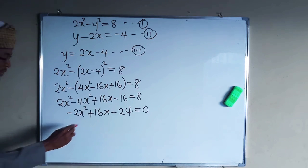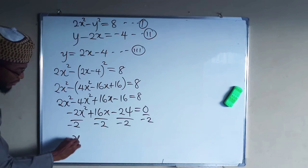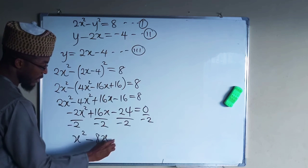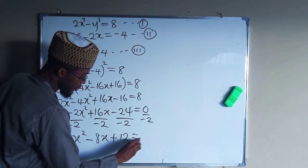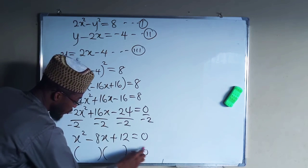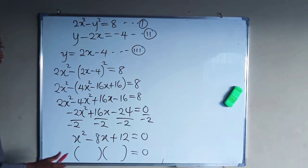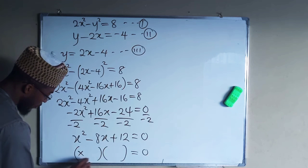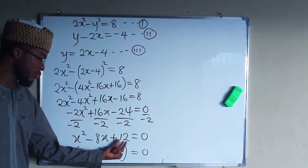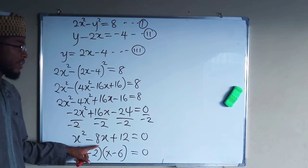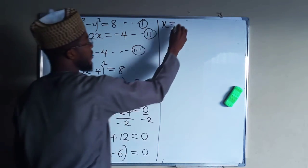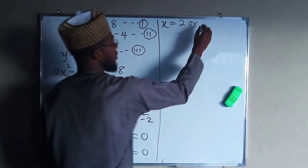Collecting like terms: 2x squared minus 4x squared gives negative 2x squared, plus 16x, minus 16 minus 8 gives negative 24, equals zero. So negative 2x squared plus 16x minus 24 equals zero. Dividing both sides by negative 2 gives x squared minus 8x plus 12 equals zero. Factorizing — two numbers multiplying to 12 and adding to negative 8 are negative 6 and negative 2 — gives (x minus 6)(x minus 2) equals zero. So x₁ equals 2 and x₂ equals 6.